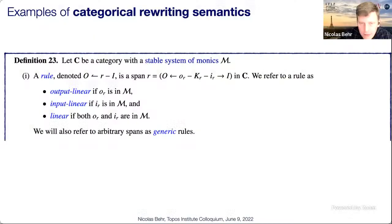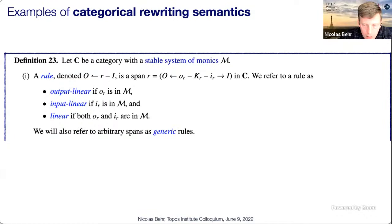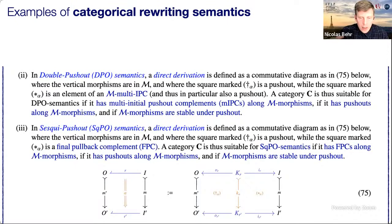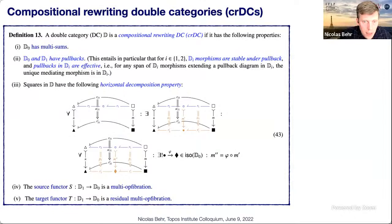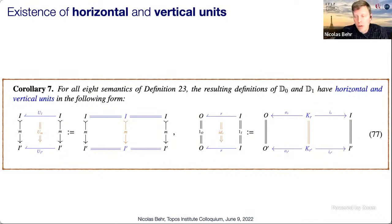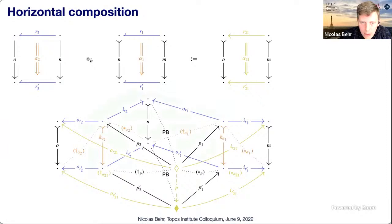Now you can see why the fibrational properties matter for compositional rewriting double categories. The units are pretty straightforward since squares with horizontal or vertical morphisms being identities are simultaneously pullbacks, FPCs, and pushouts. The horizontal composition already requires quite strong structure on the underlying category: for DPO, certain stability of pushouts; for SqPO, stability of FPCs. The decomposition property gives the other half of the adhesivity property for DPO, while for SqPO it is covered by the Beck-Chevalley condition that Richard discovered.